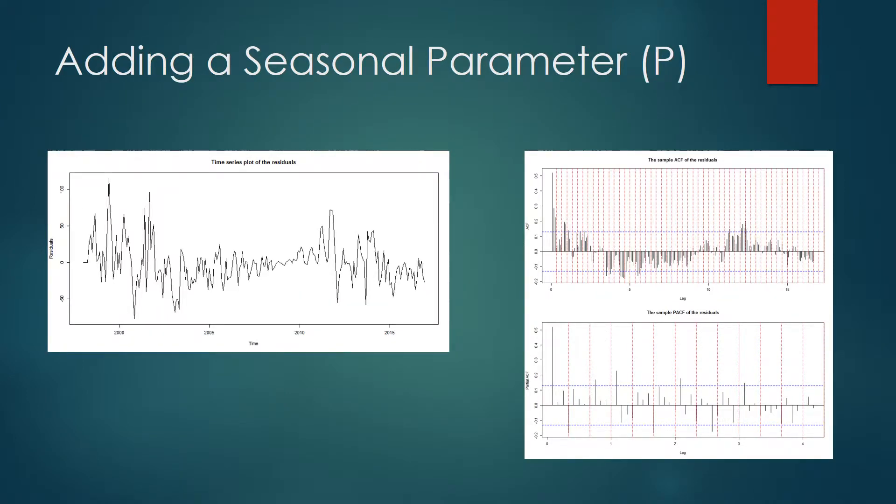Adding an autoregressive seasonal parameter has removed the significant seasonal lags in the ACF plot and reduced the significant lags in the PACF plot. Because of the changing variance, we need to apply a Box-Cox transformation.